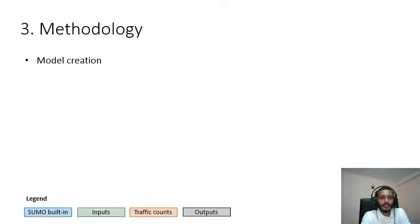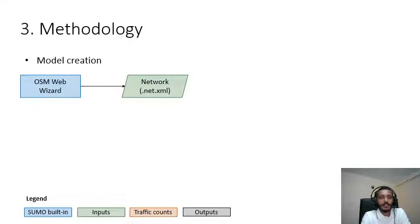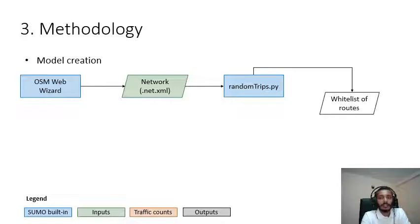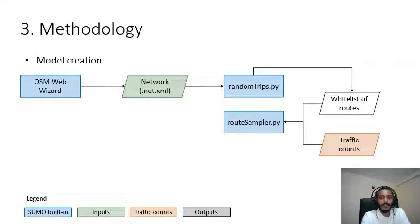Let's first see the method we propose for model creation using built-in tools available in SUMO installation. We get the network from OpenStreetMaps, extract a set of white list of routes that are possible within this network, and then use the traffic counts available to run through a script and get a route file that matches the vehicle count.